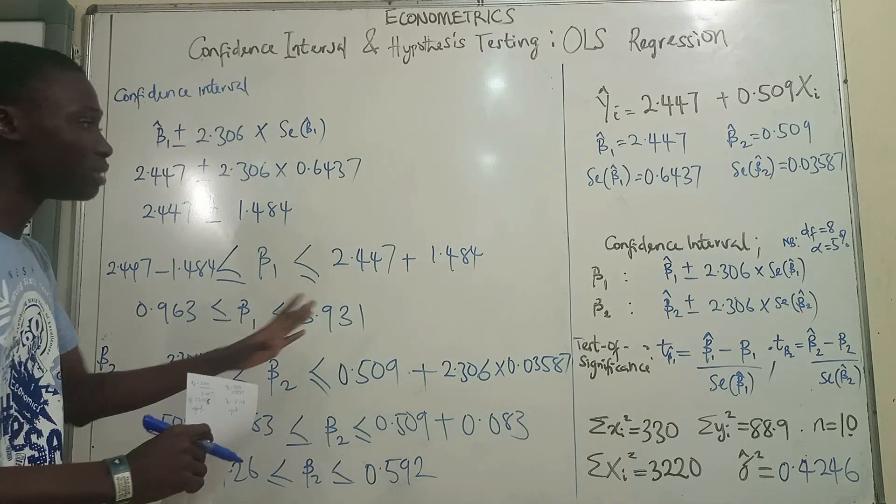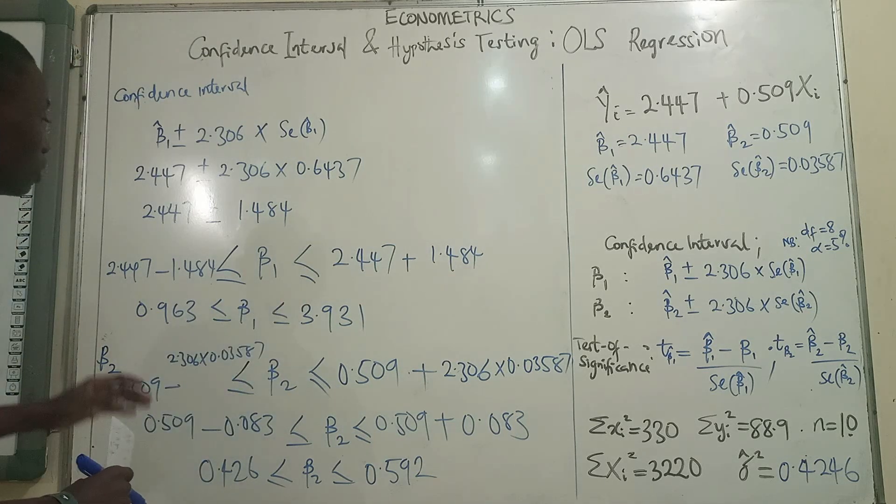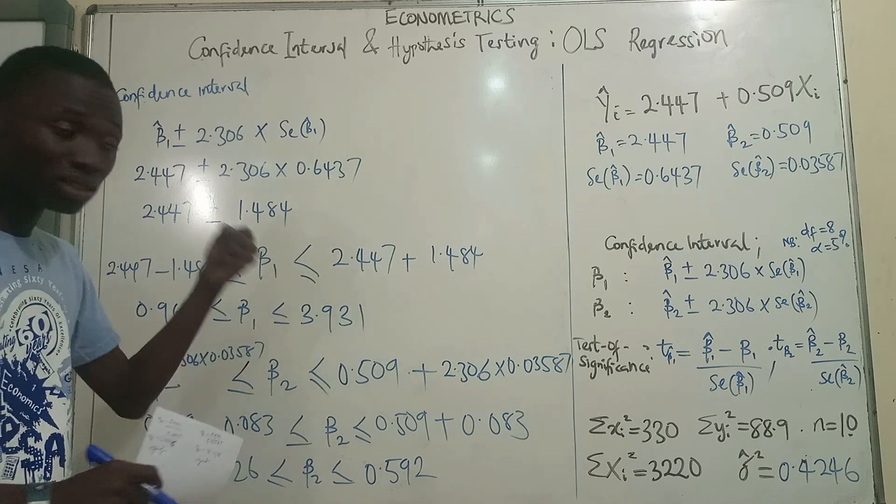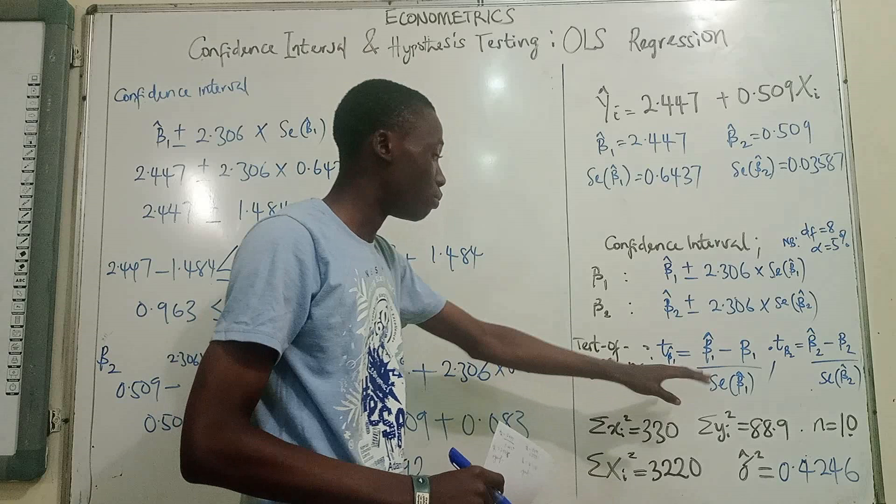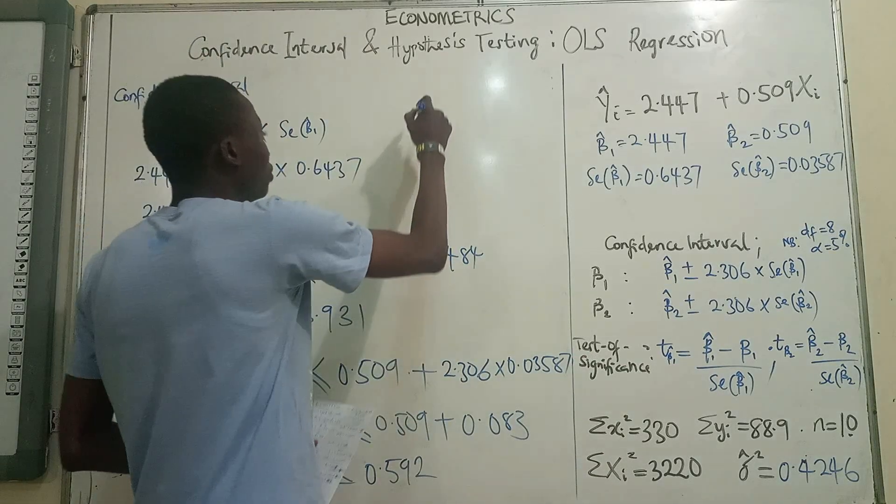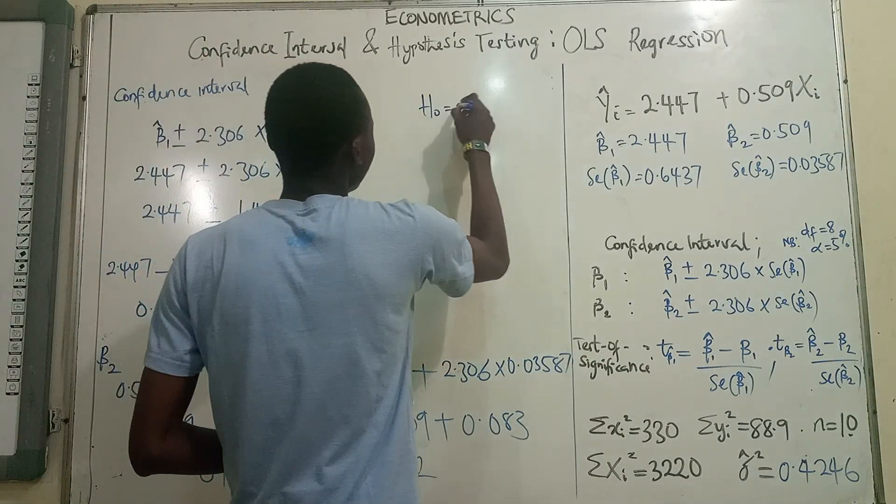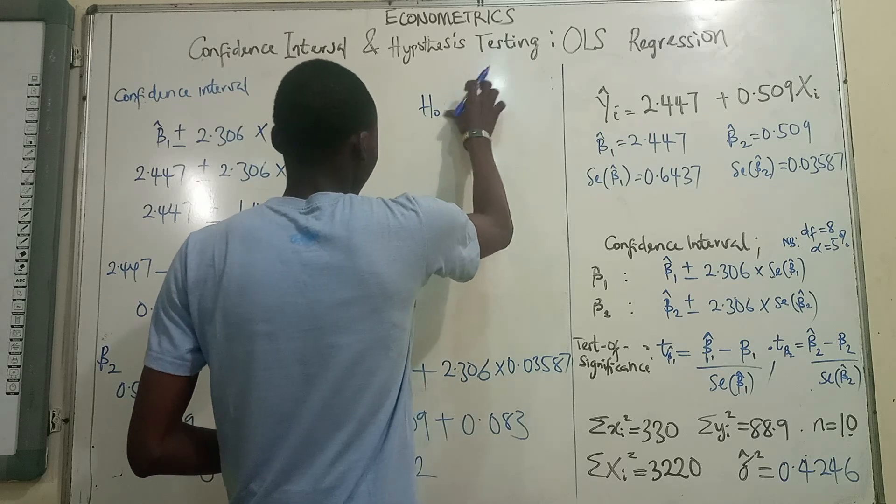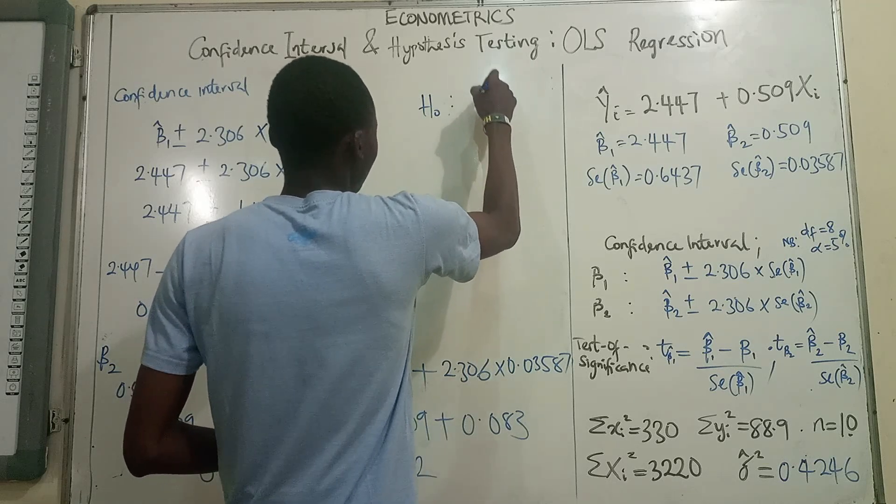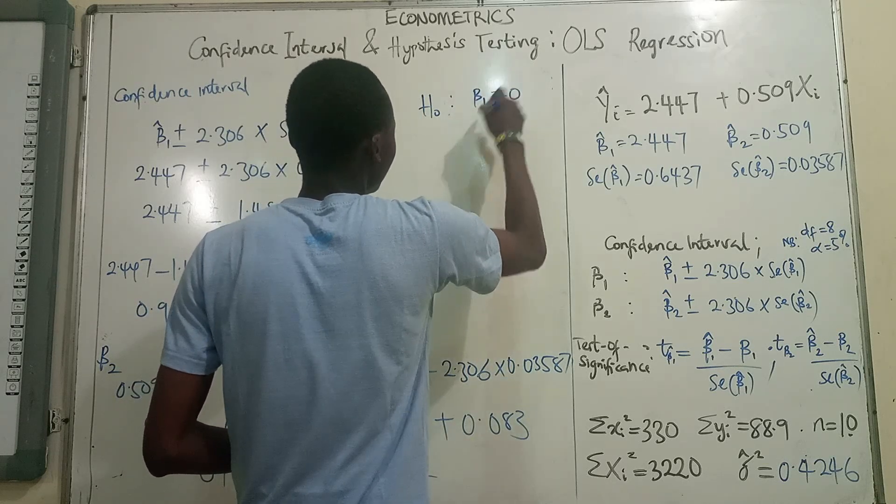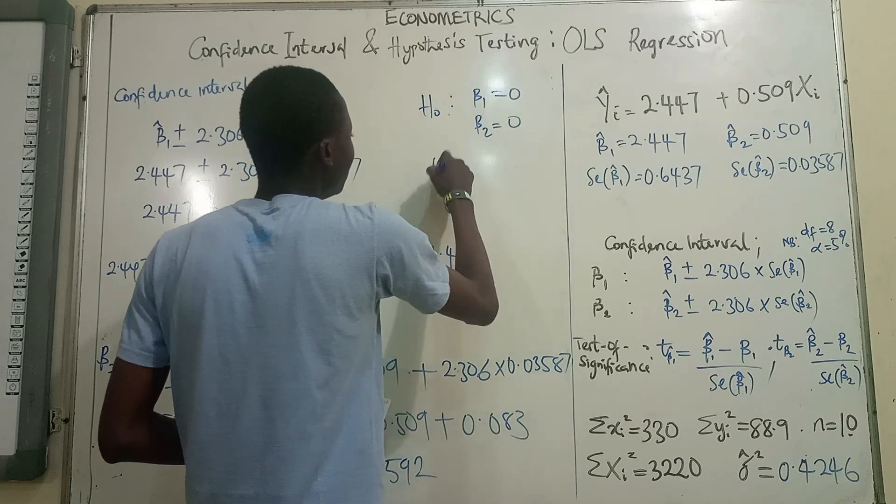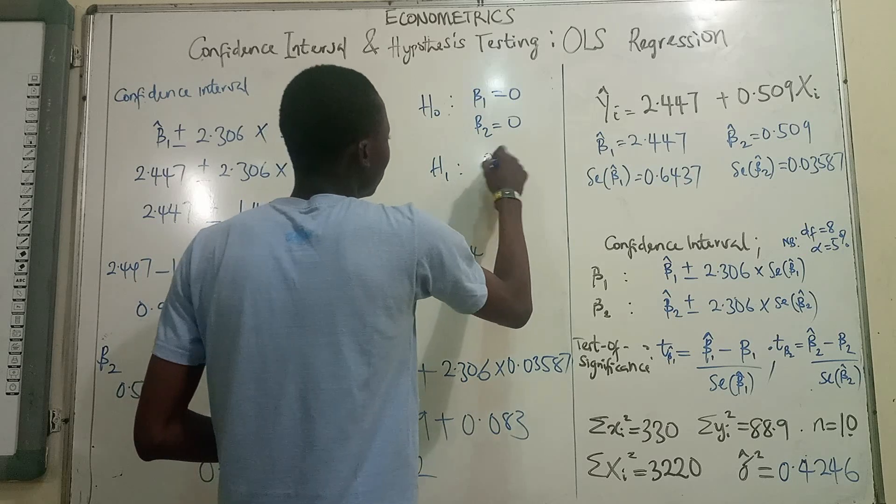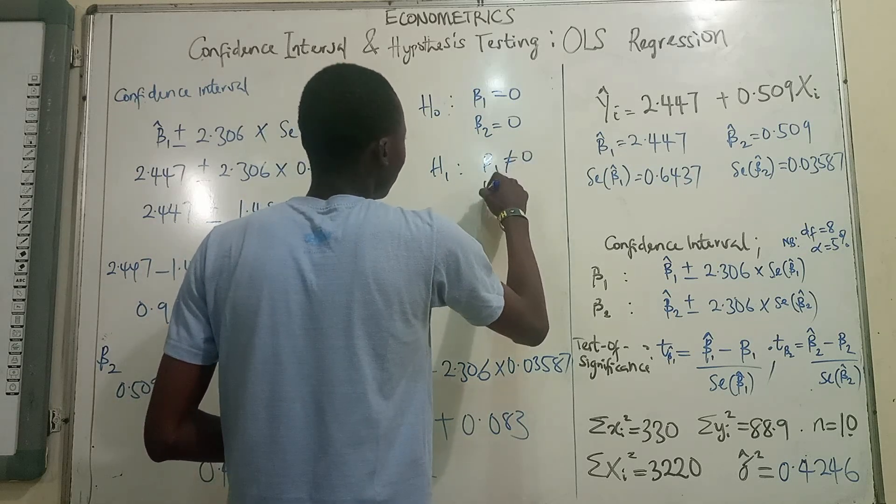That's all with estimating the confidence interval. Next, we will test the significance of beta 1 and beta 2. And the null hypothesis will be that beta 1 is 0 and beta 2 is 0. The alternative will be that it is not 0.